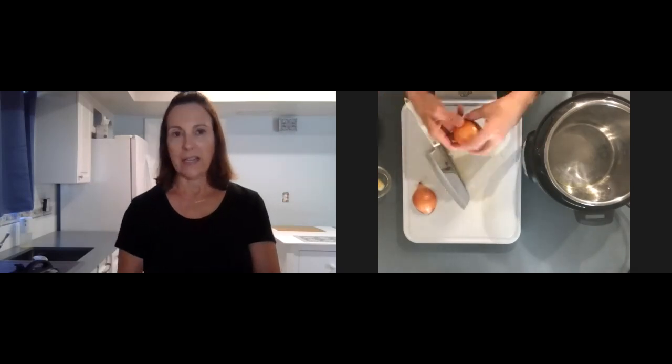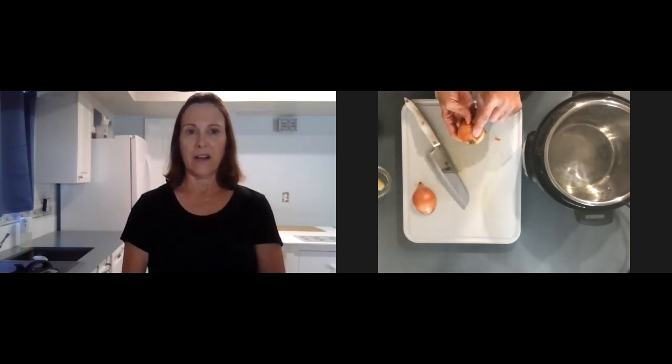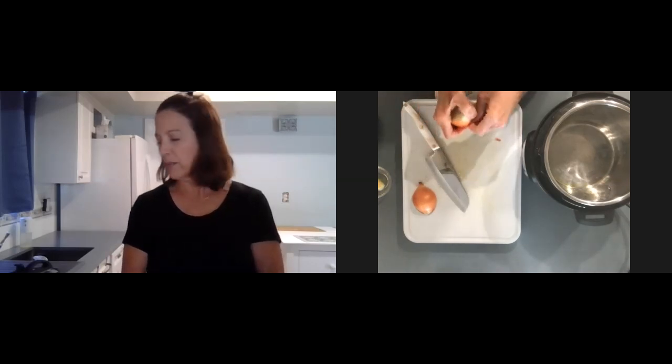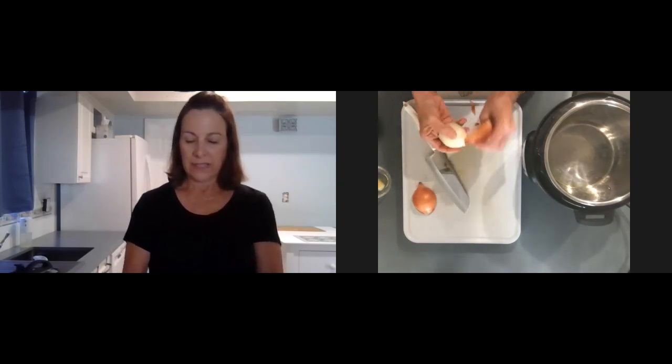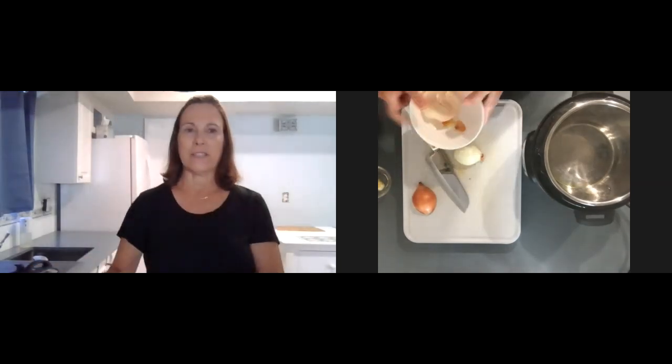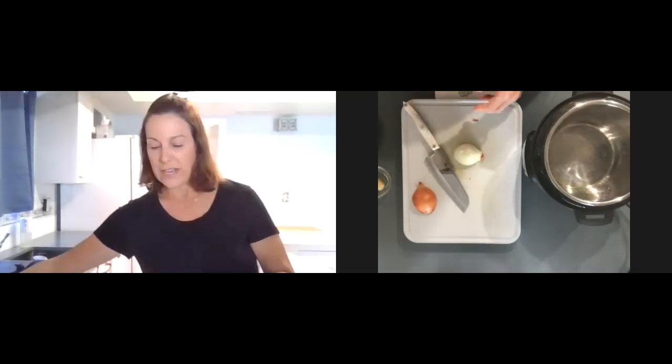I'm just cutting off one end and I'm going to leave this part on. Then I'll peel away the skin. I always have a little bowl on the counter to throw away my scraps and then you can compost that later if you want.